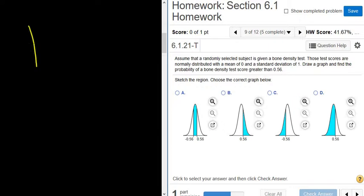OK, so we want the probability that our bone density score, which I'll call x, is greater than 0.56.